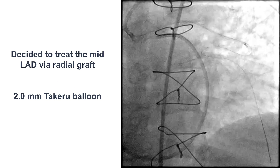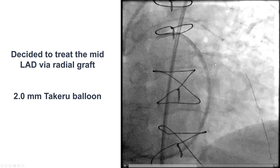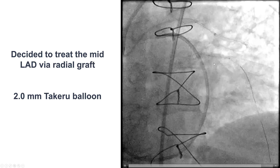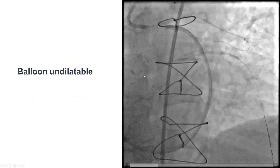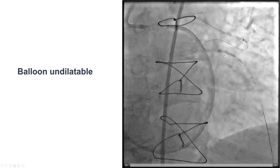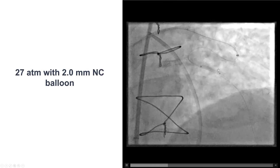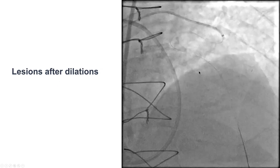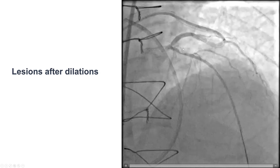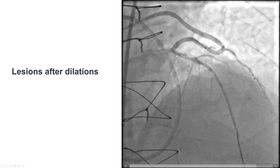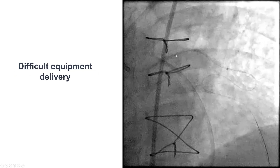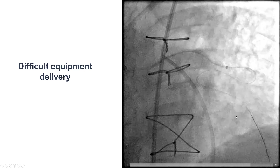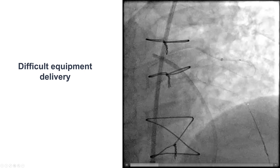After multiple attempts, we decided to try to treat the mid-LAD lesion through this highly tortuous radial graft. Using multiple balloons, we were actually able to deliver a 2.0 mm Takeru balloon to the mid-LAD, but the lesion was not balloon-dilatable initially due to significant calcification. We were able to deliver another 2.0 mm NC balloon and successfully expand the lesion. Despite having a GuideLiner and a body wire, delivery was very challenging, so we placed a second wire — giving us two wires going down the radial graft, up the diagonal, and then down the LAD.